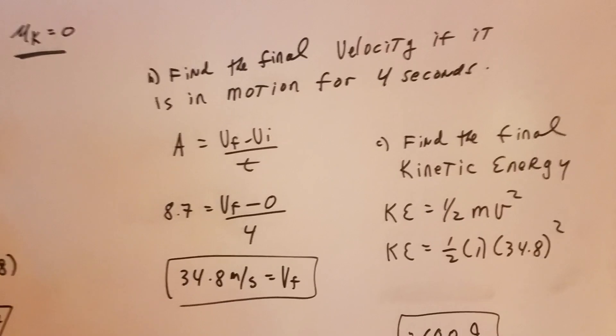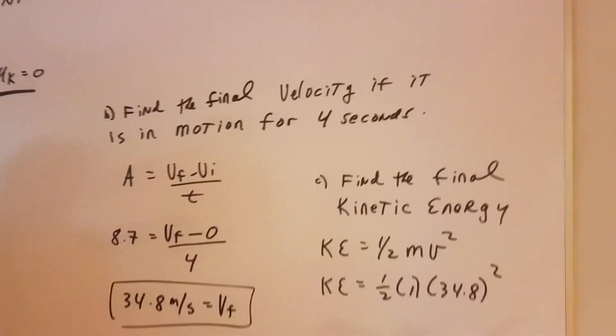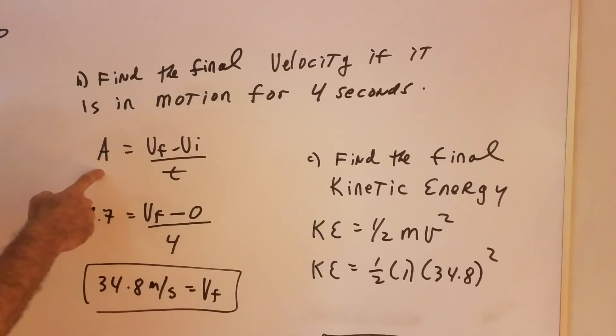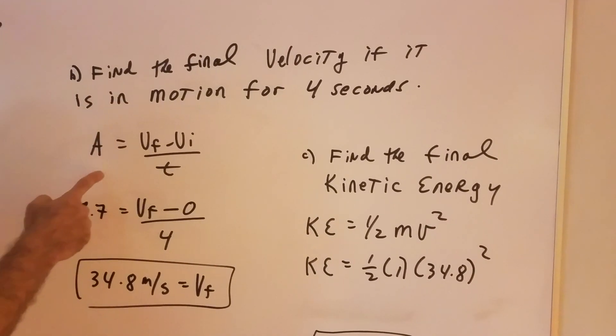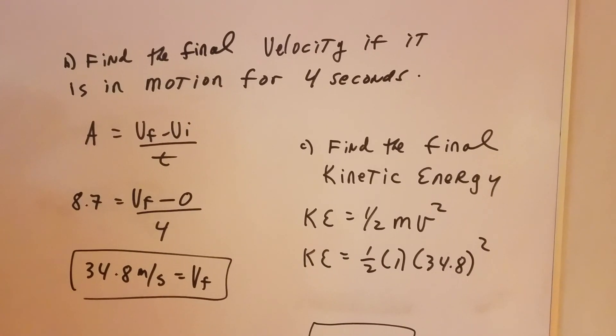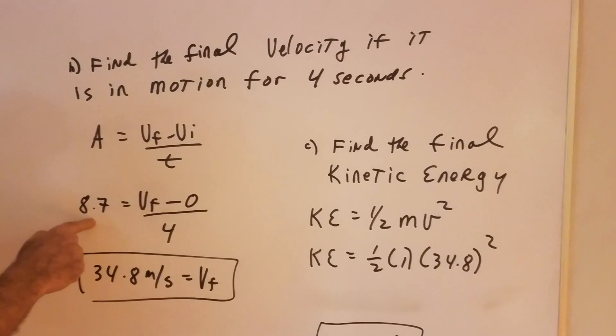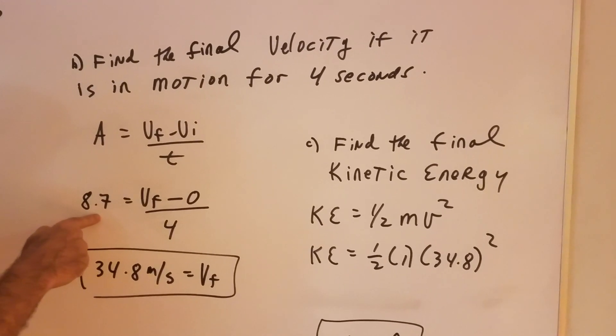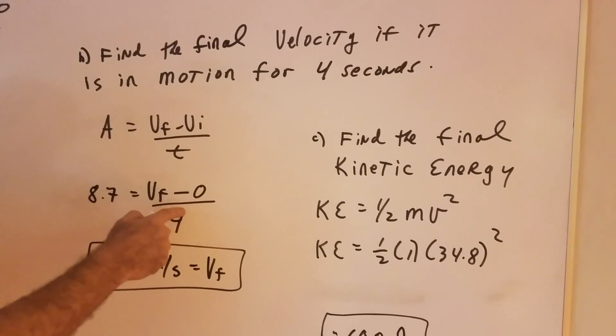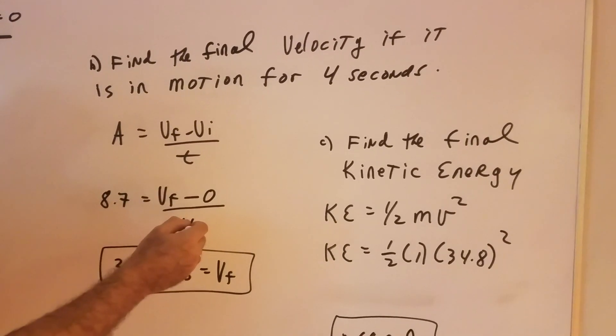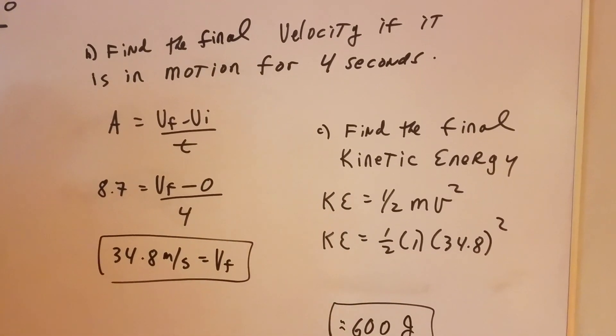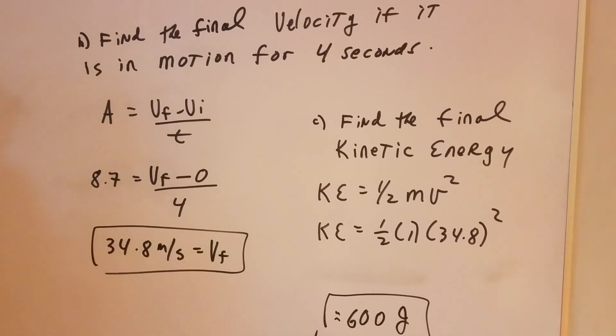Part B, I want to find the final velocity if it's in motion for 4 seconds. Well, I'm going to use the acceleration formula. The acceleration, which we already found, is the final velocity minus the initial over the time. Well, we already know it accelerates at 8.7 meters per second squared. We don't know the final speed. We know the initial started from rest. So that's a zero and it's 4 seconds. Cross multiplying gives me about 35 meters per second for the final velocity.